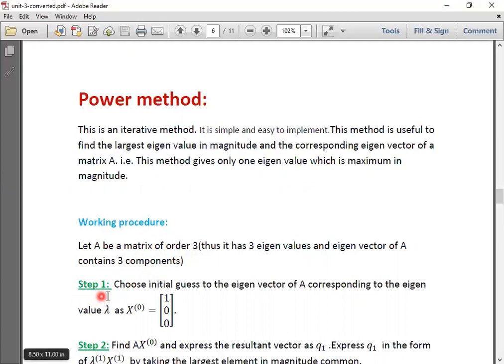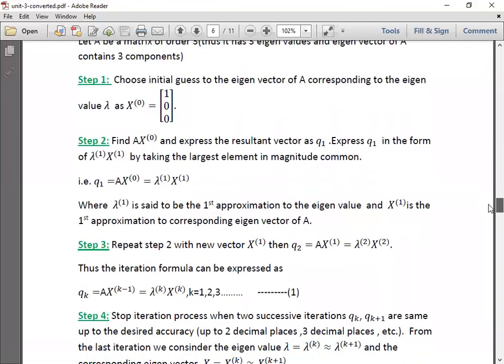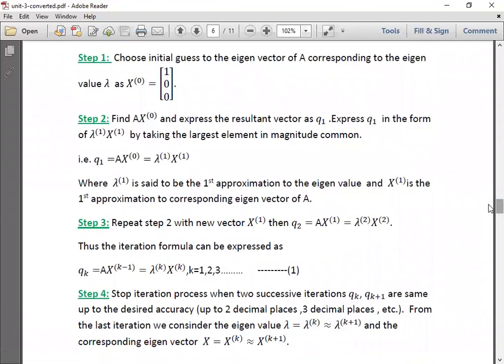First step is, choose initial guess to the eigenvector of A corresponding to the eigenvalue lambda, as initial guess to the eigenvector of A corresponding to the eigenvalue lambda.